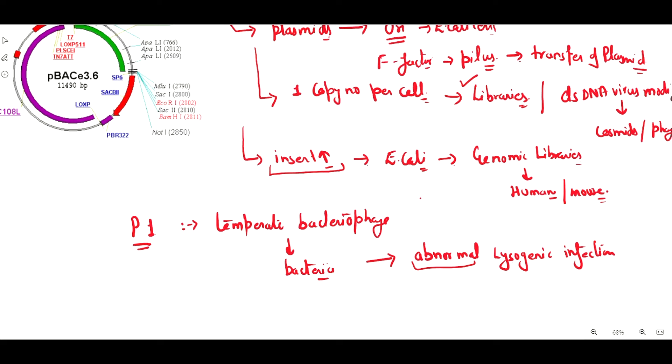When I'm saying abnormal, typically lysogenic bacteria integrate into the chromosomal bacterial DNA. But in case of temperate bacteriophage P1, this does not happen. It exists independently as a normal plasmid and does not integrate into the chromosomal DNA.